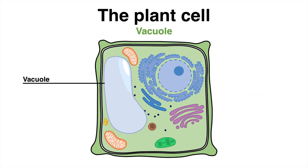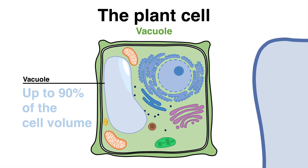Plant cells have a gigantic permanent vacuole that can take up to 90% of the total cell volume in plants. This special organelle is a water-filled volume surrounded by a membrane known as the tonoplast. The vacuole has a whole range of different functions: it maintains the internal pressure called turgor and contributes to the cell's total stability. It is also often seen as a large trash can that can digest waste inside the cell.